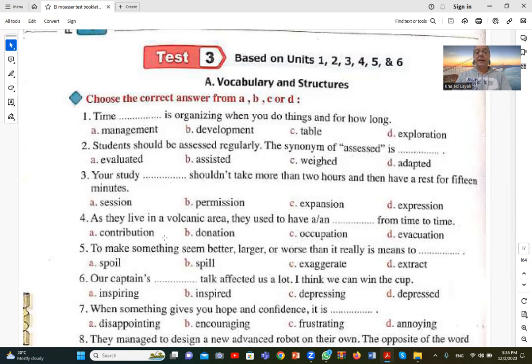Number four. As they live in a volcanic area, they used to have A or N from time to time. هم عايشين في منطقة بركانية وبالتالي اللي بيحصل لهم من فترة للثانية evacuation, D. بيحصل إخلاء للمنطقة عشان خوفاً أن البركان يثور. Evacuation means إخلاء, D is correct.